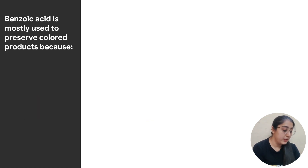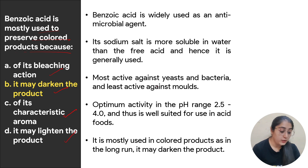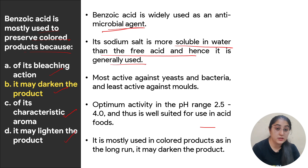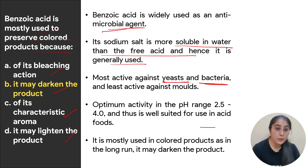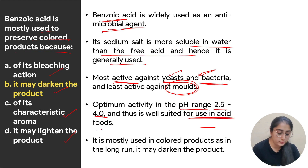Next question: benzoic acid is mostly used to preserve colored products because — options are: because of its bleaching action, because it may darken the product, because of its characteristic aroma, or because it may lighten the product. Benzoic acid is widely used as an antimicrobial agent; its sodium salt is more soluble in water and hence more commonly used. It is very active against yeast and bacteria but not very active against mold. Optimum activity is in the pH range of 2.5 to 4, making it suitable for acidic food products.